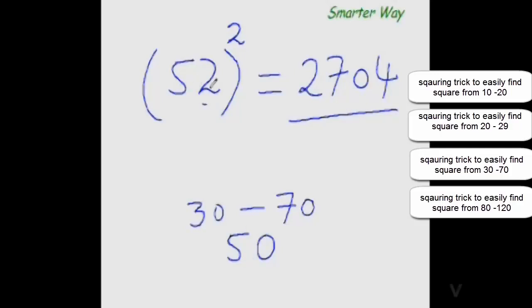So 52 is 2 more than 50 alright. So add that 2 immediately to 25, 25 plus 2 is 27. For the last 2 digits find the square of that distance. So square of 2 is 4 so put 04 here.